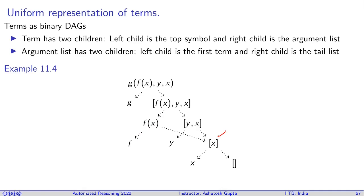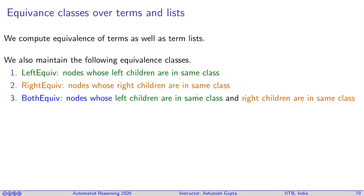Once we have this kind of representation, we not only find equivalence between terms, we also compute the equivalence between lists of terms. That gives a simpler way of computing components. For that matter, we maintain three other equivalence classes besides the main equivalence classes we compute for equality reasoning.